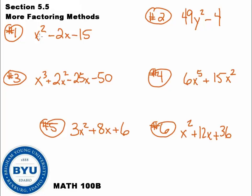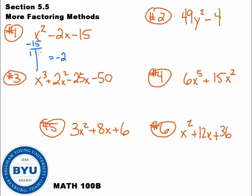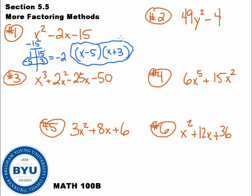Let's take a look. Number one: any common stuff? No common stuff that I can see. I count three terms, so this is a three-term polynomial. The a value is one, so all I need to do is find the factors of c that add up to b. I need factors of 15 that add up to negative two. Factors of 15: one and 15 — that won't give me two. Five and three — I can get negative two if I make the five negative. So I write x minus five and x plus three. That is our answer for number one.